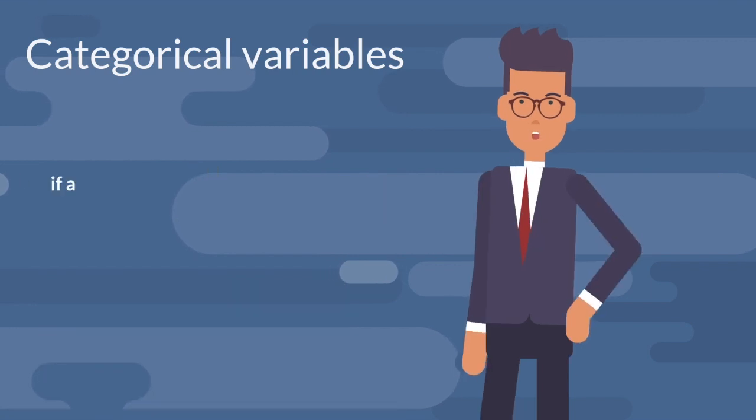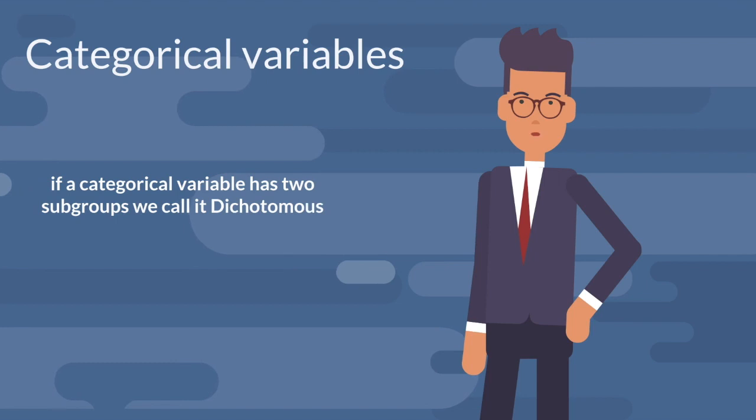One more thing to add, if the categorical variable has two subgroups, we call it a dichotomous.